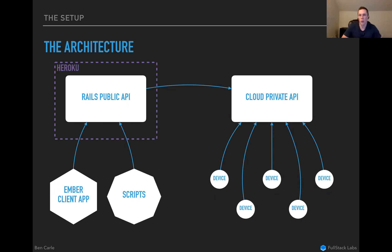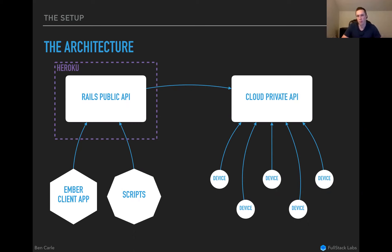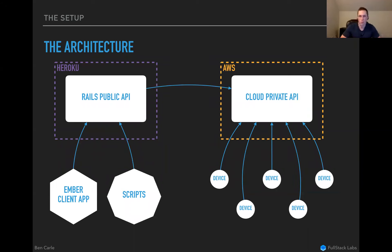Our Rails public API runs on Heroku. Lower traffic means lower costs for a more managed hosting service. On the other hand, the cloud piece that handles devices handles a ton of traffic because devices check in every few seconds instead of once a week — so that piece runs on a number of AWS instances.